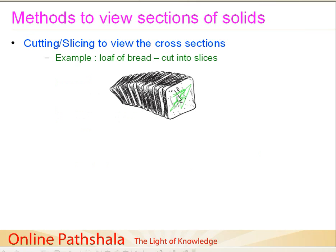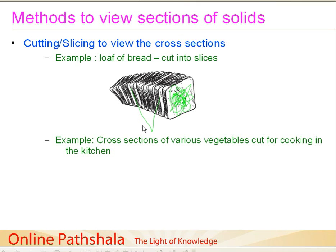This is a section assuming that some bread has been taken away from the loaf. Similarly, these white regions that we see are nothing but the sections of this loaf of bread. That is one example.